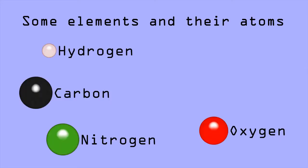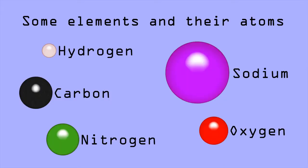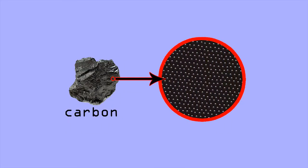Each chemical element has its own distinctive kind of atom. So a lump of carbon is composed of lots of carbon atoms, all identical to each other.